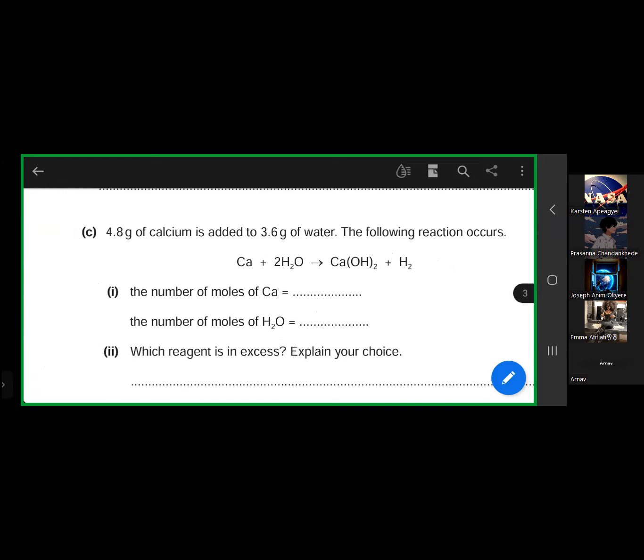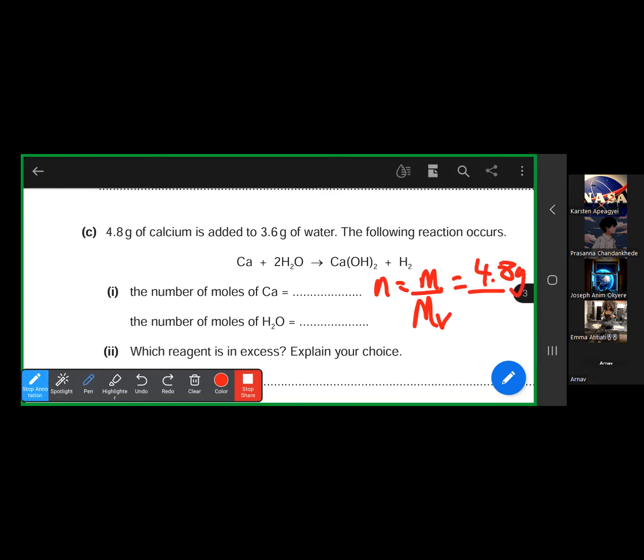What's the number of moles of calcium? Since you have mass of calcium given, we can use n equals m over Mr. Your mass for calcium is 4.8 grams. The atomic mass for calcium is 40 grams per mole. Where from the 40? The mass number for calcium is 40. So 4.8 divided by 40, what are we getting? Anybody with a calculator?